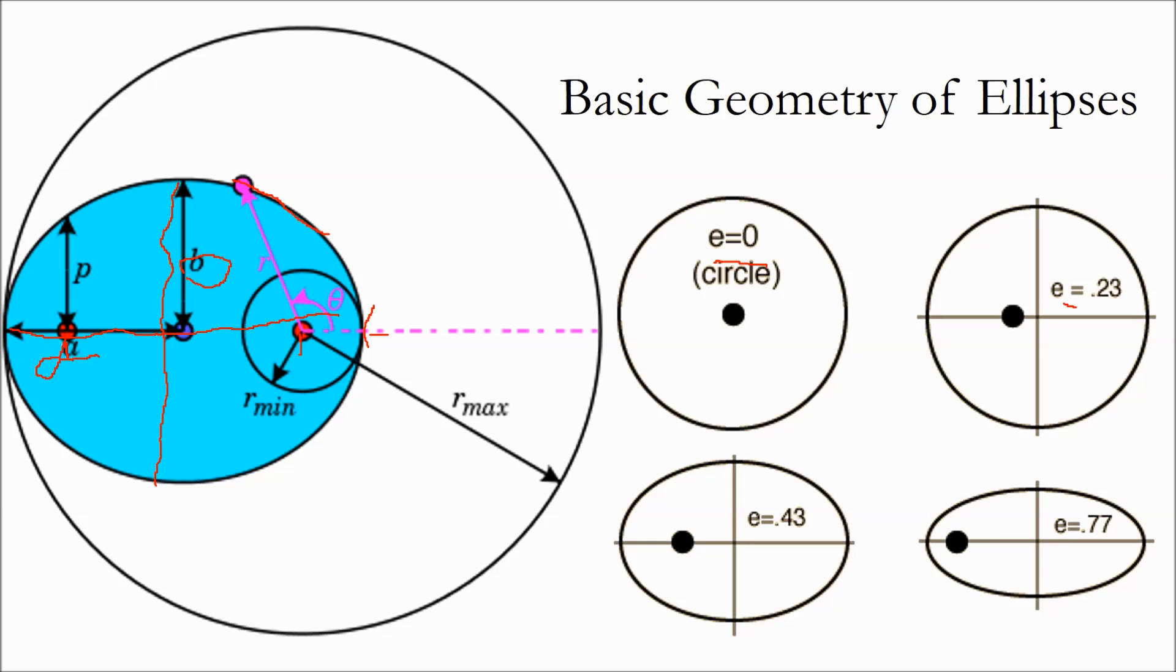So, here we have an eccentricity of 0.23, and the focus is a little off-center, and here we have an eccentricity of 0.43, and the focus has moved even more. And here's 0.77, and the focus is all the way out here. And in every case, you can see how it kind of stretches out. And the minor axis and major axis kind of change with respect to each other.